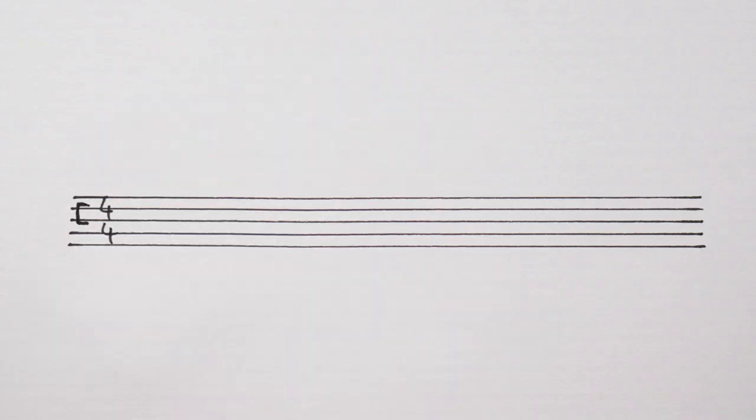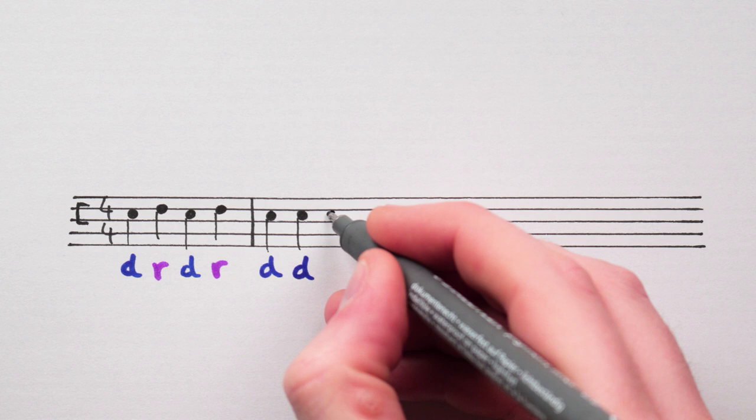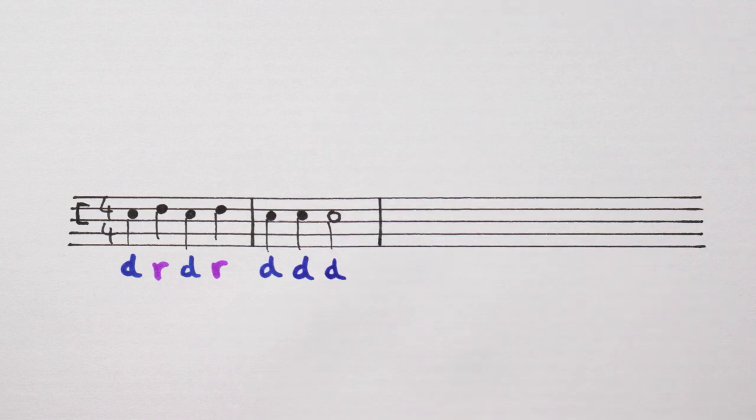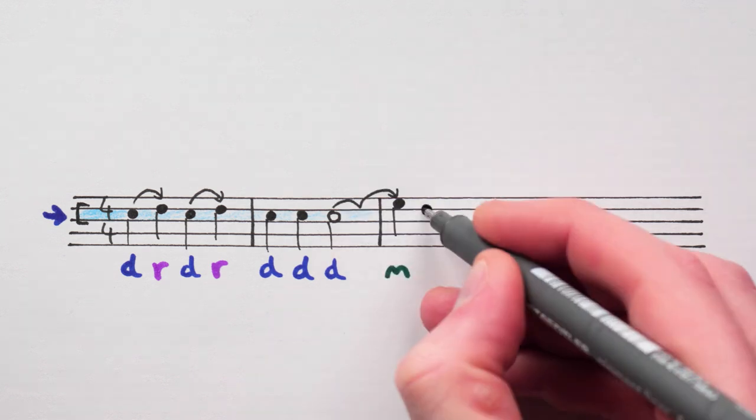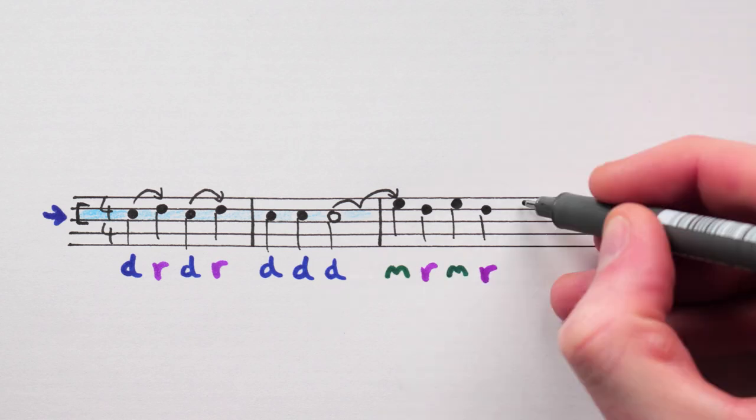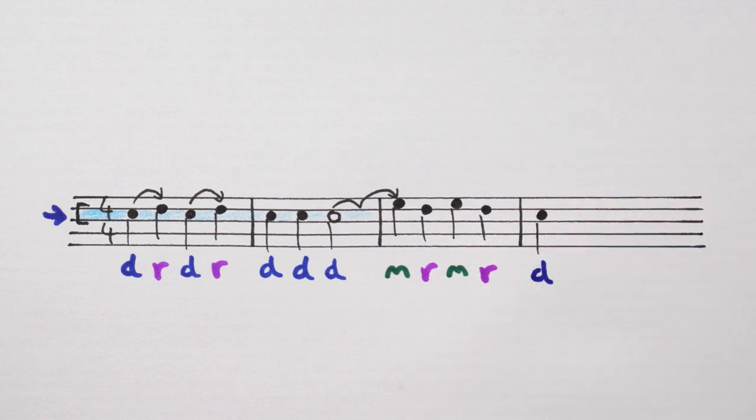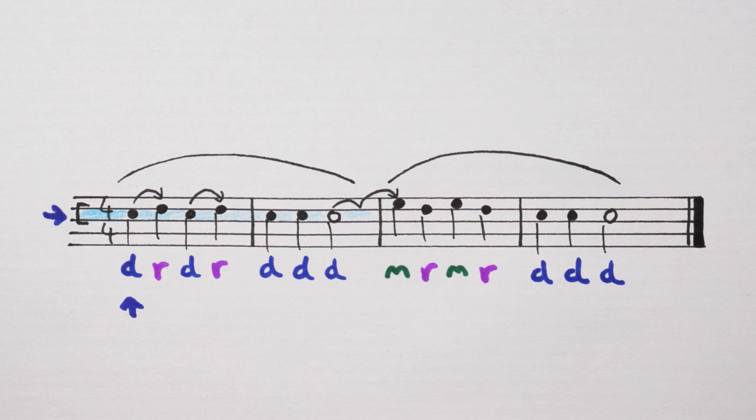So, in staff notation, it would be Do, Re, Do, Re, Do, Do, Do. Remember, Do is on the Do space, given by the Do clef, and Re is a step above Do. And here's our bit, Mi, two steps above Do, Re, Mi, Re, and we finish on Do, Do, Do.